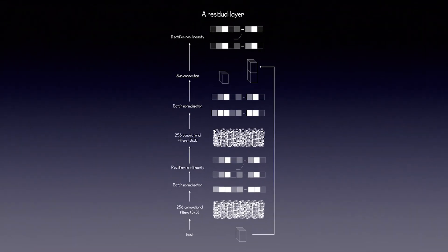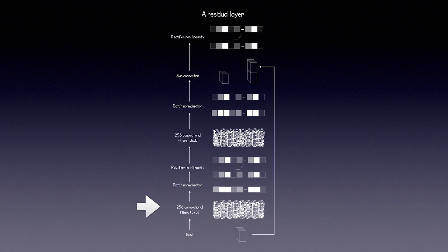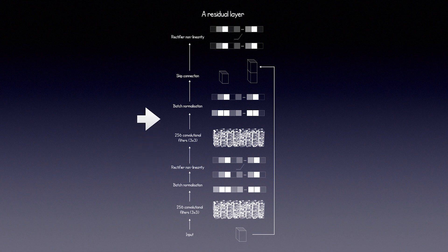Now we've got 40 stacked residual layers. Inside each one is the exact same thing, so let's take a peek. First up, we have 256 convolutional filters with a 3x3 kernel as before. Then batch normalization. A ReLU activation. Another convolution. More batch normalization. And finally, we have the skip connection where the original input is added back into the convolved output. And one more ReLU just for good luck.